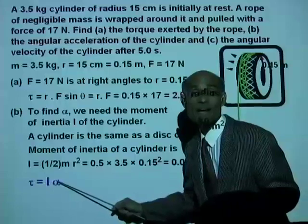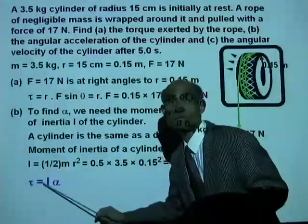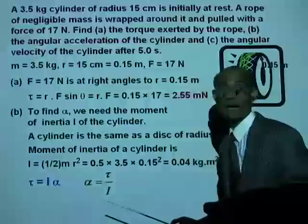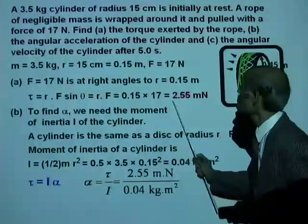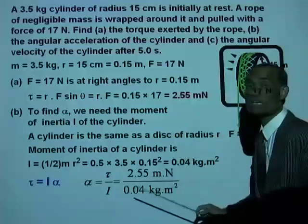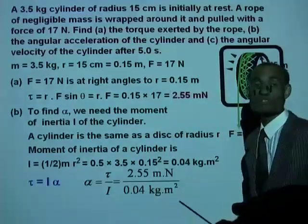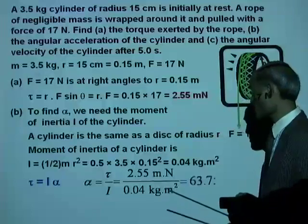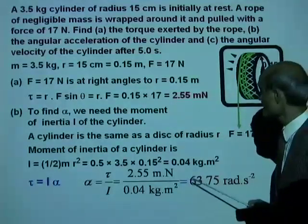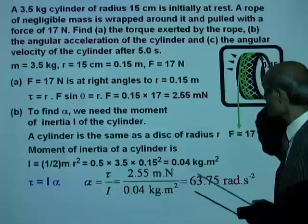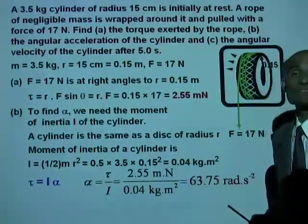Using τ = Iα, we have τ = 2.55 N·m and I = 0.04 kg·m², giving angular acceleration α = 2.55 / 0.04 = 63.75 rad/s².